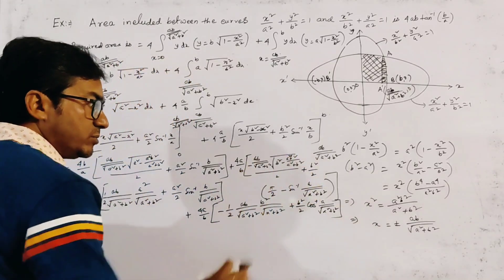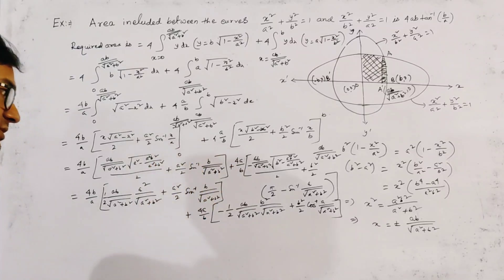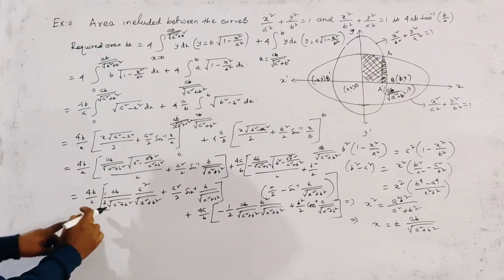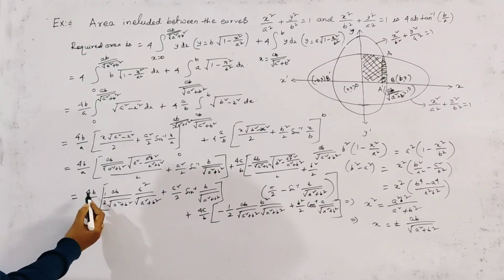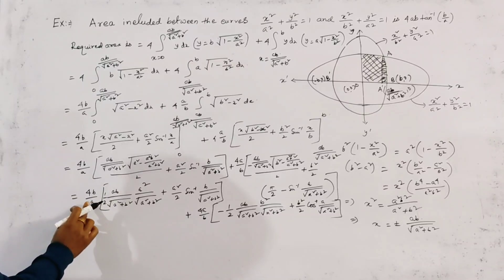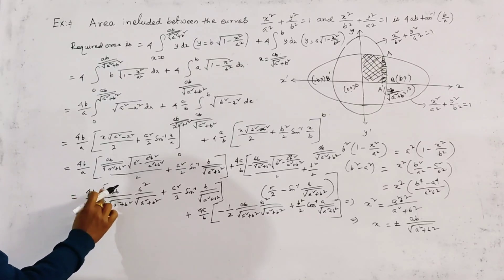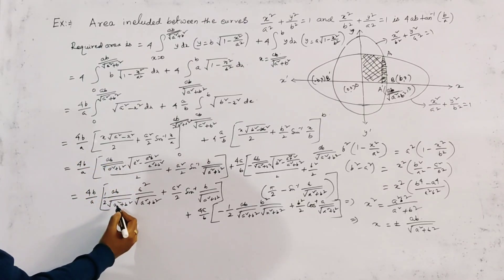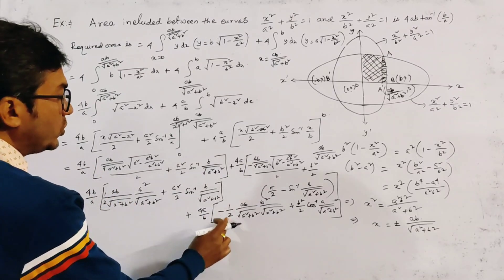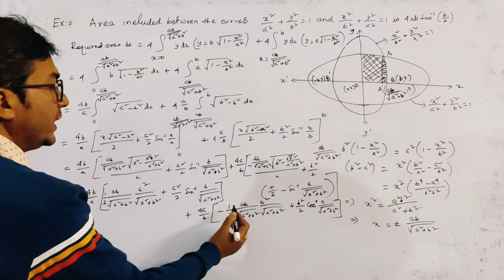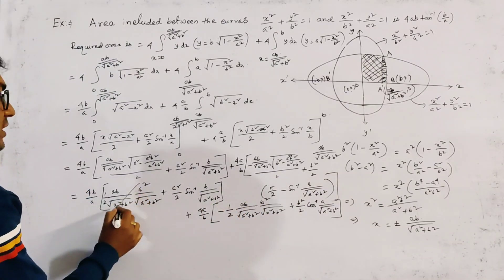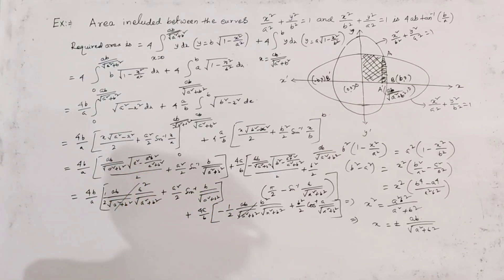Using the identity π/2 − sin⁻¹(x) = cos⁻¹(x), the b²/2 term becomes cos⁻¹(a/√(a² + b²)). After multiplying by the outer factors, two terms involve a²b² cancel with each other — specifically the 4b/a · a²b²/[2(a²+b²)] term from the first integral and the −4a/b · b²·a²b²/[2(a²+b²)] term from the second integral cancel out.